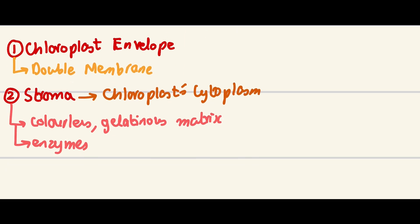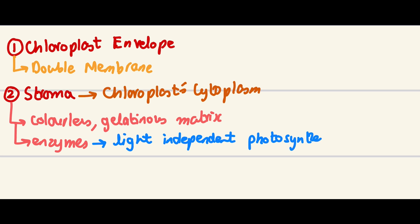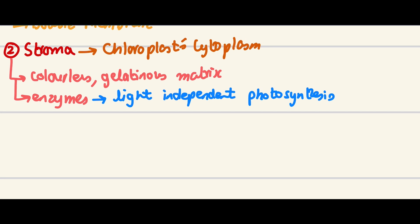Importantly, the stroma contains enzymes for the light-independent stage. For A2 students watching, you'll know what this is. For O-level and A1 students, don't worry about this — it's something covered in A2 and not really relevant right now.